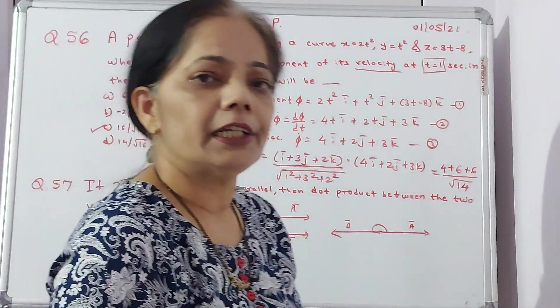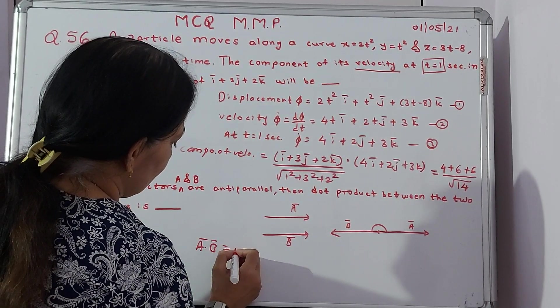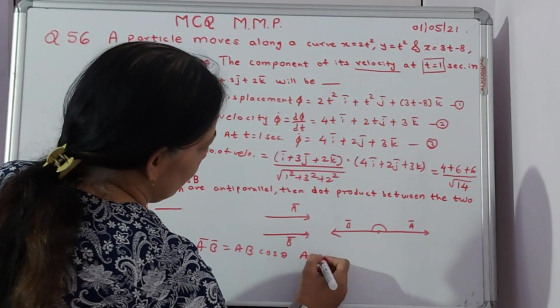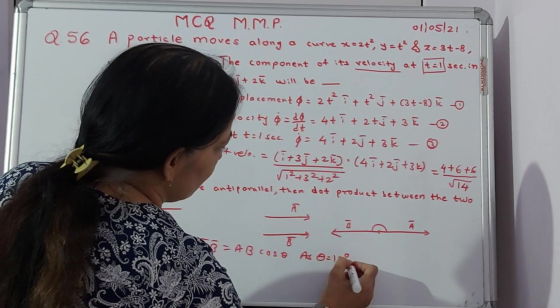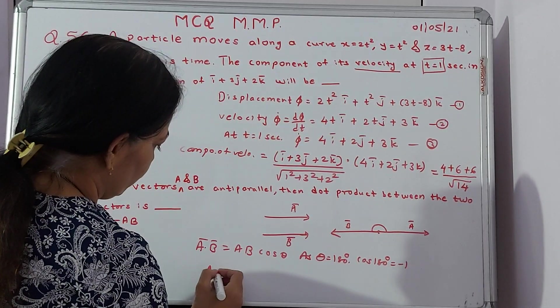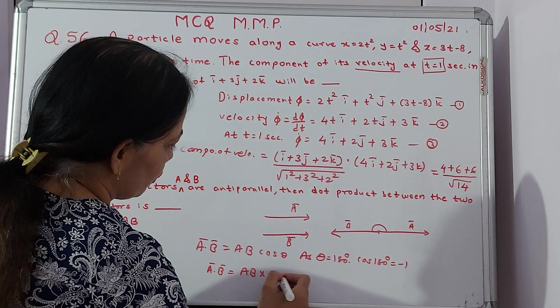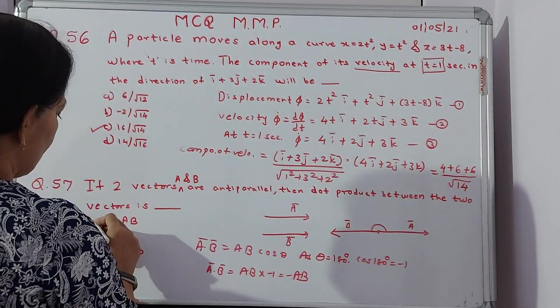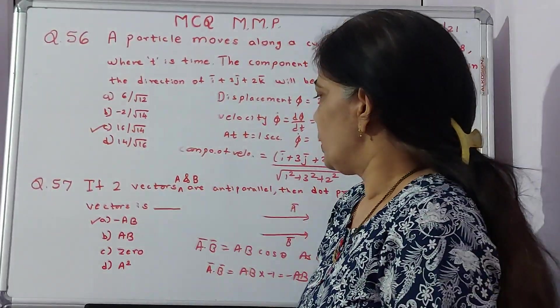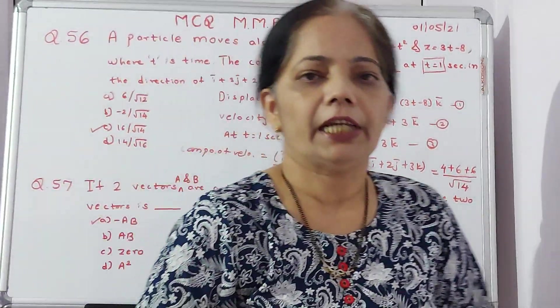Angle between them will be 180 degrees. We can say A dot B is equal to AB cos theta. As theta is 180 degrees, cos of 180 will be minus 1. Therefore, A dot B is equal to AB multiplied by minus 1, so minus AB. Answer is A. This is the way, a very simple idea we are used for the two vectors to be anti-parallel. Then we will move towards question number 58 and 59.